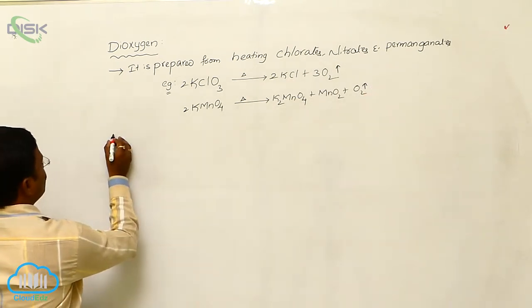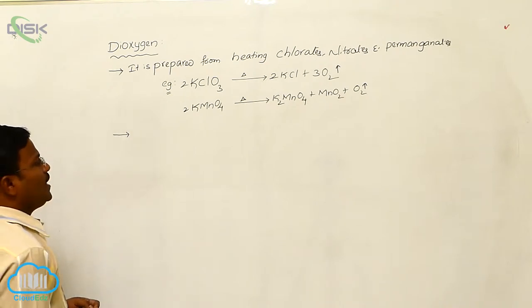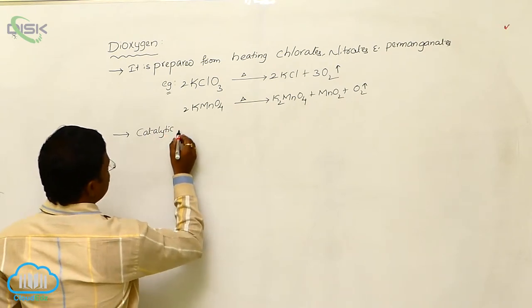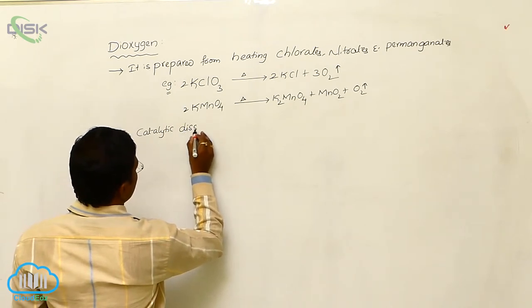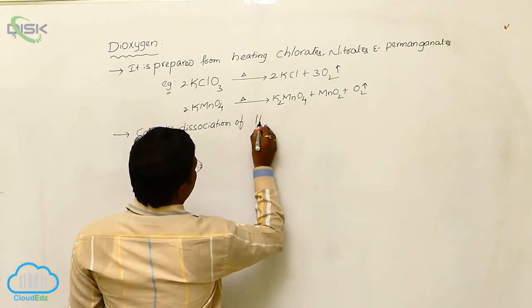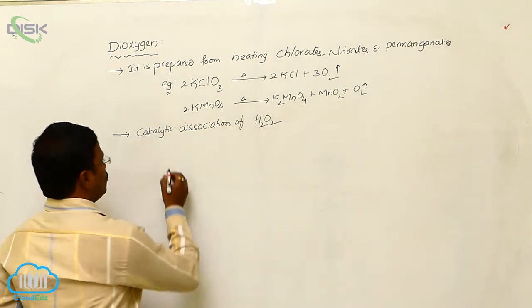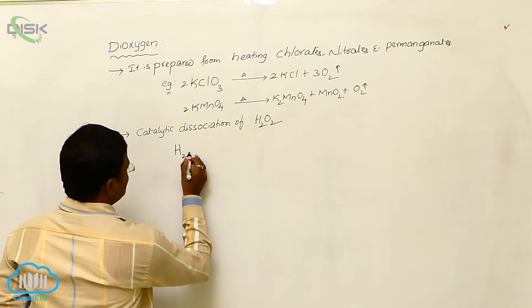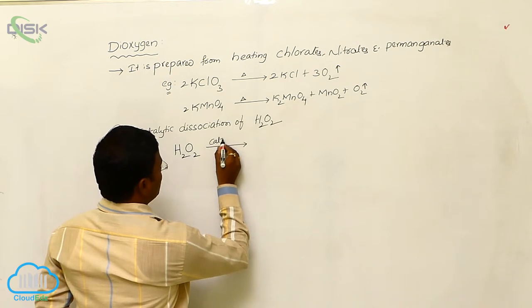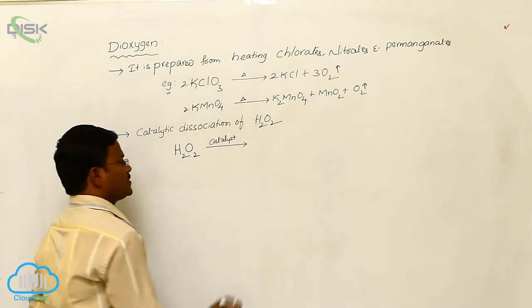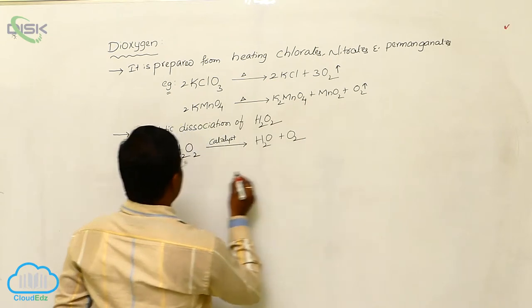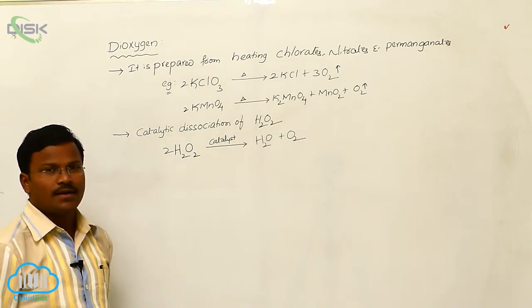Similarly, in one more method, Dioxygen is produced from the catalytic dissociation of hydrogen peroxide, H2O2. Hydrogen peroxide, which is available in liquid state, in the presence of catalysts like manganese dioxide, it dissociates to produce oxygen molecule, which is also called Dioxygen.